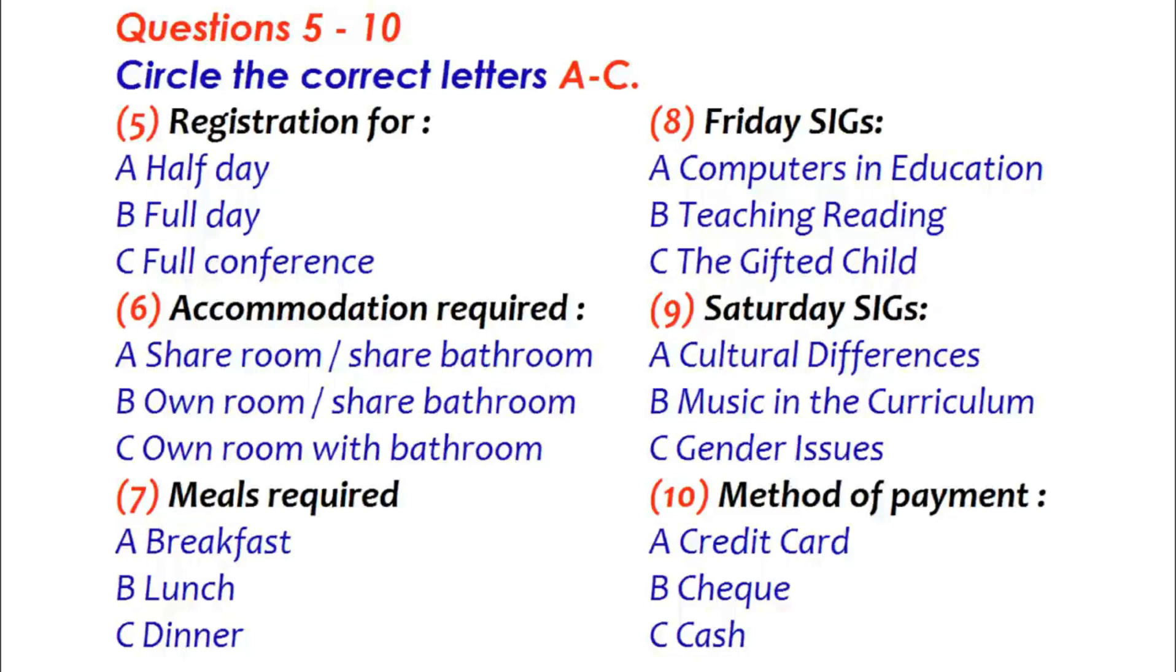Good. Now, will you be requiring accommodation while you're here in Melbourne? Yes. I suppose I will. What's available? Well, we have several levels of accommodation. You can share a room with another student for $25 a night. Hmm. Or you can have your own room but share the bathroom. I believe it's just down the corridor. That's $45. Right. Or you can have a single room with your own bathroom. I don't mind sharing a room. On second thoughts, yes, I do. I'll have my own room, but I'll share the bathroom.